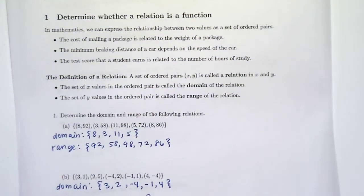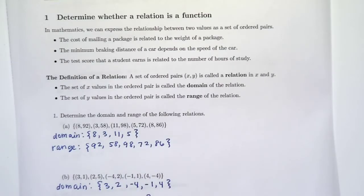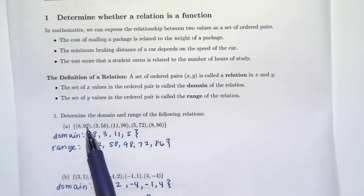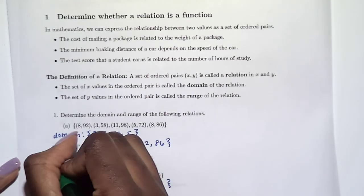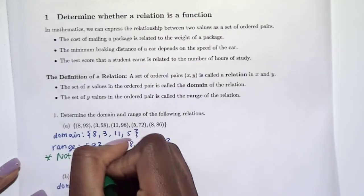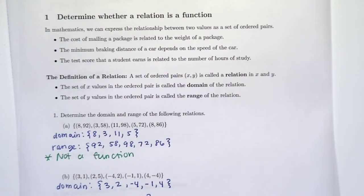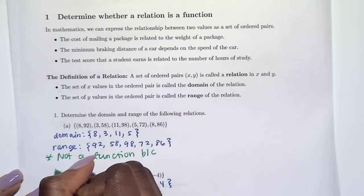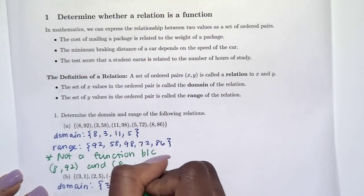Let's look at the first one. Is it true that for each x value here there's only one y value? Well that's not true because this x goes with 92 but it also goes with 86. So it tells us that this relation is not a function. Not a function, I'll put a reason: because 8 goes with 92 and it also goes with 86.